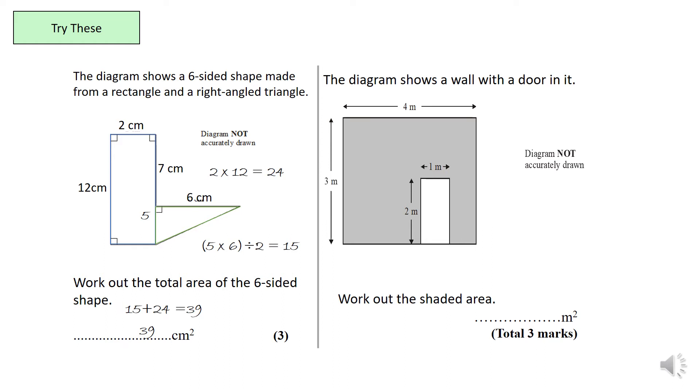And for the second question, very similar to the one you did on the last slide, we work out the area of the wall which is obviously 12 and then the area of the door which is 2 times 1, nice and easy, 2. Now because we only need the shaded area, the grey area, we don't need the area of the door. We can subtract that from 12 and it's going to be 10. So the answer is 10 metres squared.